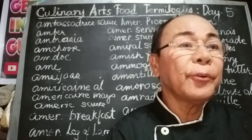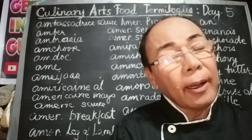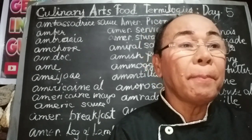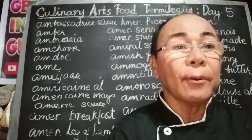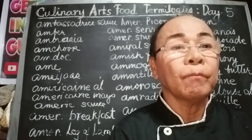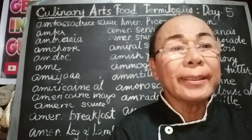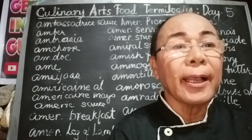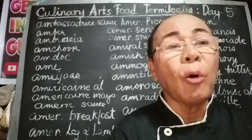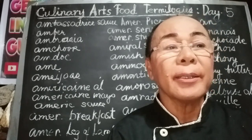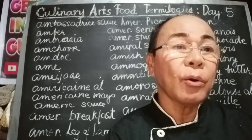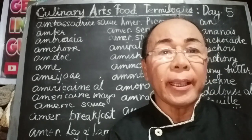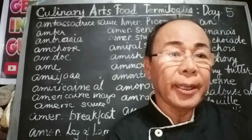The first term is called the Ambassador Sauce. This is a French type of compound sauce made from a supreme sauce garnished with pureed pot chicken breast and finished with whipped cream.